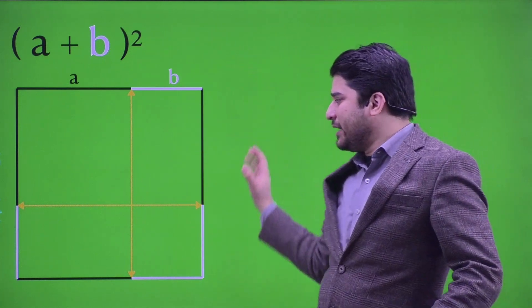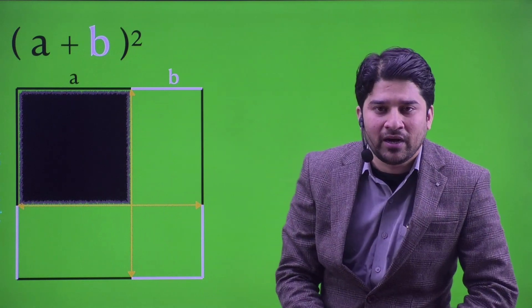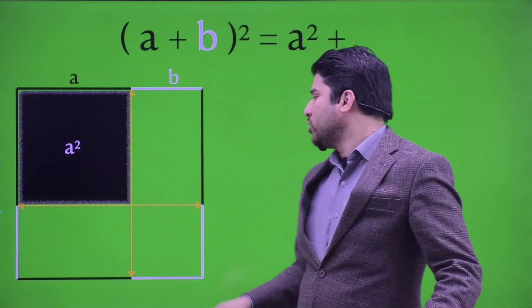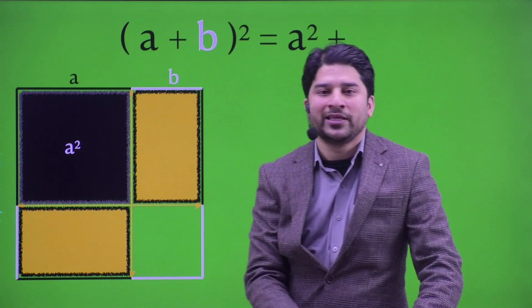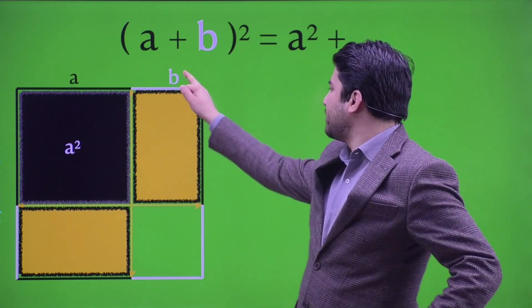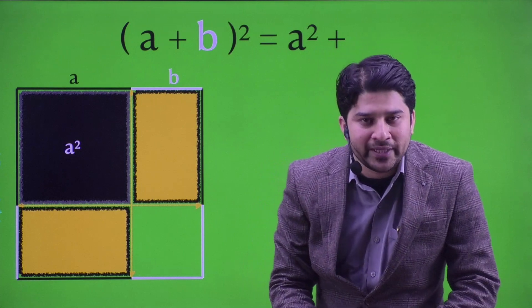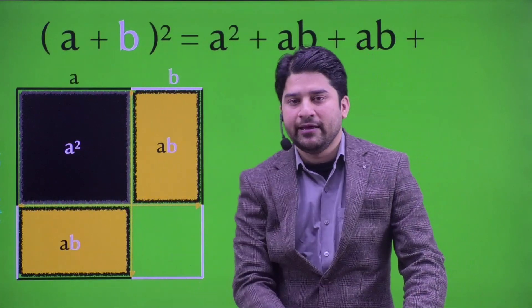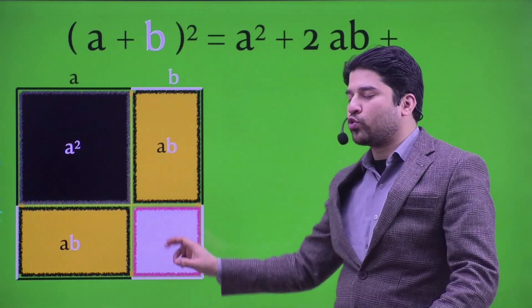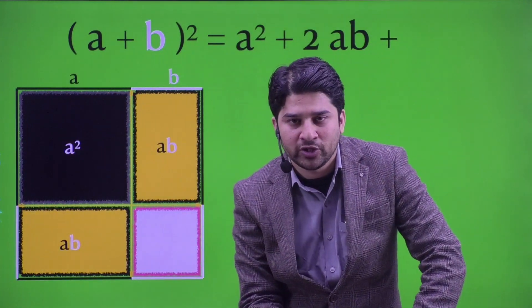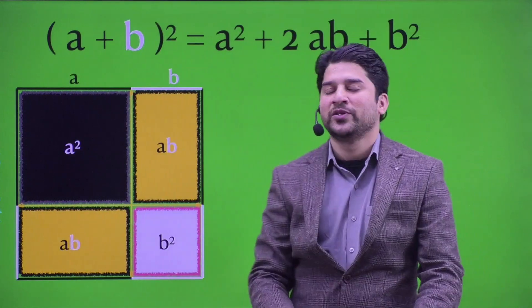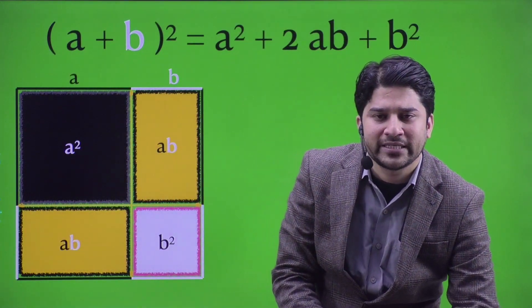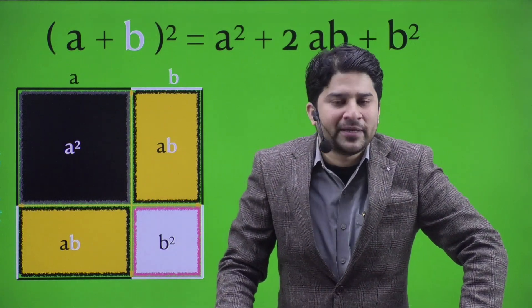Now this complete (a plus b) whole square has been broken into four regions. The first region is a square of side a by a, so its area is a square. These two regions are rectangles of dimension b by a, so their areas are ab and ab. The last region is a square of dimension b by b, so its area is b square. So definitely I can say that (a plus b) whole square is nothing but a square plus 2ab plus b square.